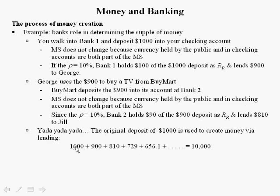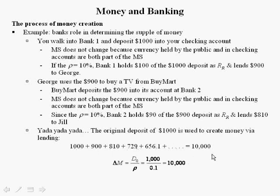There are infinitely many numbers being summed up, and mathematically this sum converges to $10,000. The numbers on the left-hand side can be rewritten as the initial increase in checkable deposits divided by the reserve requirement ratio. The original deposit was $1,000; the reserve requirement ratio is 10% or 0.1. $1,000 divided by 0.1 is $10,000.